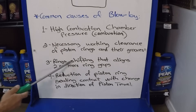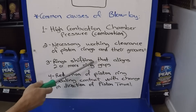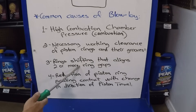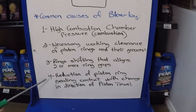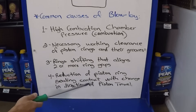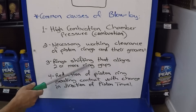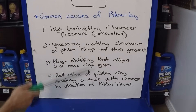Then you have number three: piston rings shifting that aligns two or more ring gaps. As the engine operates, there's a possibility of the rings rotating, and there will be times that the gaps will be aligned, creating a way for the gases to go through. Then you have number four, which is the reduction of piston ring sealing contact with the change of direction of the piston travel. As this piston is changing direction thousands of times per minute, these rings are going to flex a little, and that will be another contributor of some of those gases passing through. So these are some of the most common causes of blow-by.